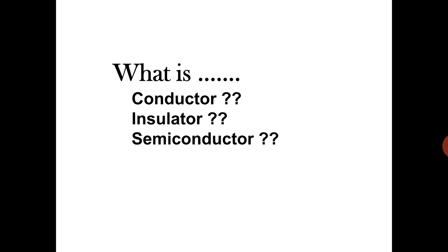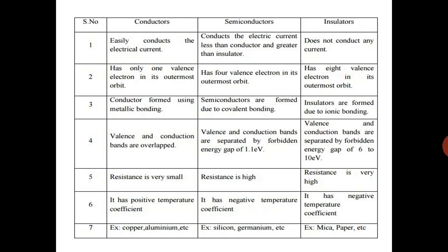Now, we gonna start our first unit. In this chapter, we can see number of semiconductor diodes. First of all, we all know that what is conductor, what is insulator and what is semiconductor. This is the difference table of conductor, semiconductor and insulator. First, conductor.